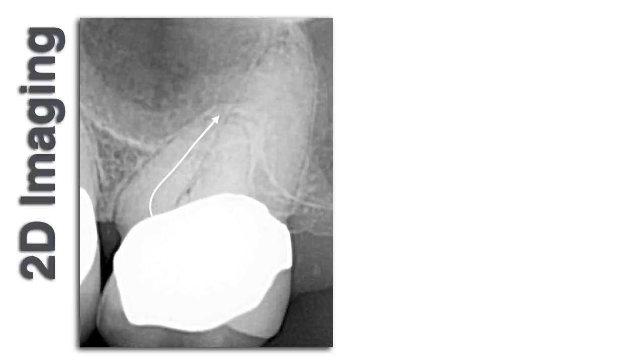There is a 90-degree curvature of the MB root immediately above the cervical of the CEJ. This is a great opportunity to break a file. This is going to influence the choice of taper for the final shape. My expectation preoperatively and postoperatively turned out to be the case — sticking to 04 tapers was going to be fine.